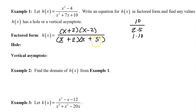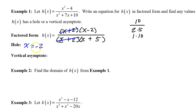Focus on the denominator as we look for the location of any hole or vertical asymptote. If there's a factor in the denominator that gets canceled out completely, that tells you where a hole is. For example, the x plus 2 cancels out with the x plus 2 in the numerator. That means we have a hole at x equals negative 2. Any factor in the denominator that does not get canceled out gives us a vertical asymptote. So we have a vertical asymptote at x equals negative 5.